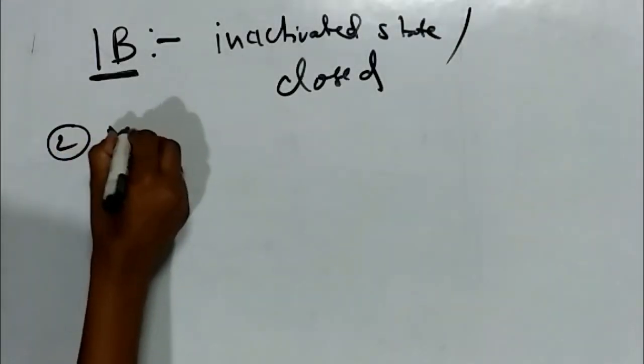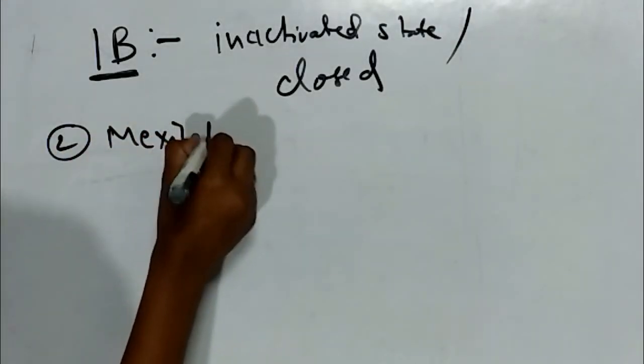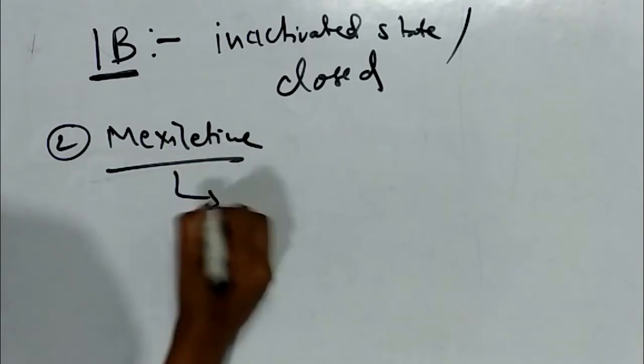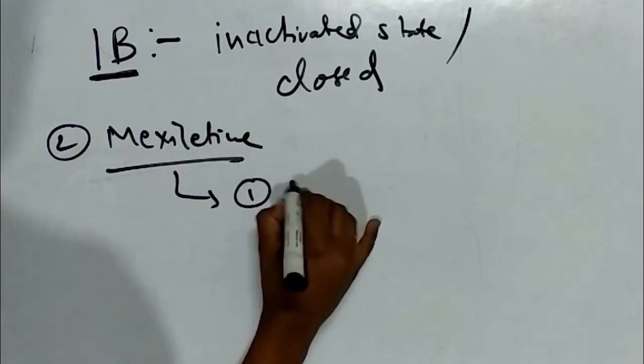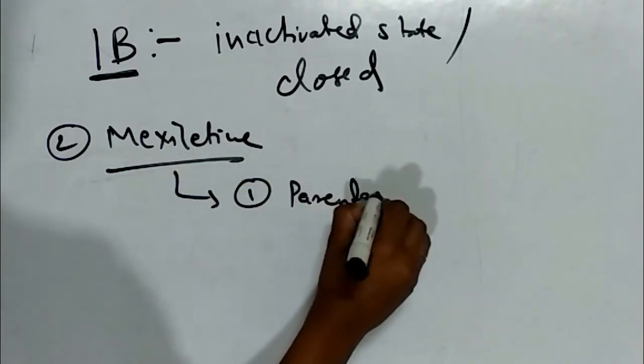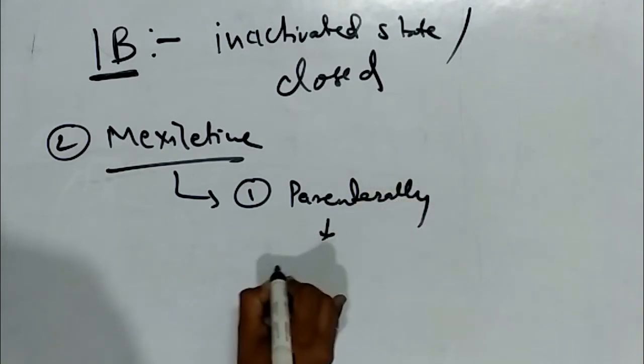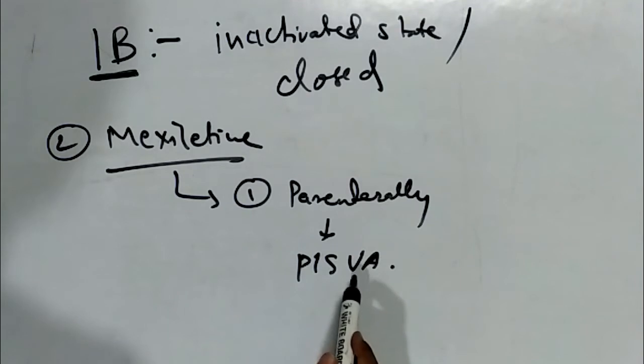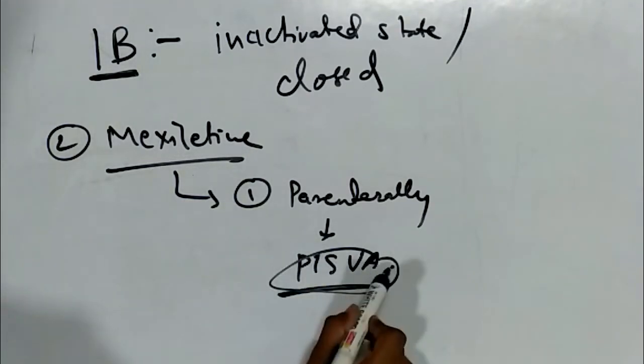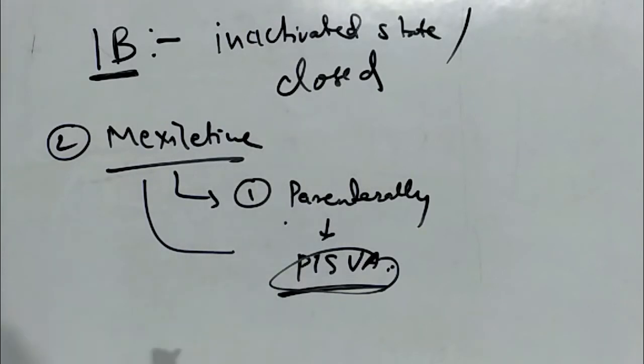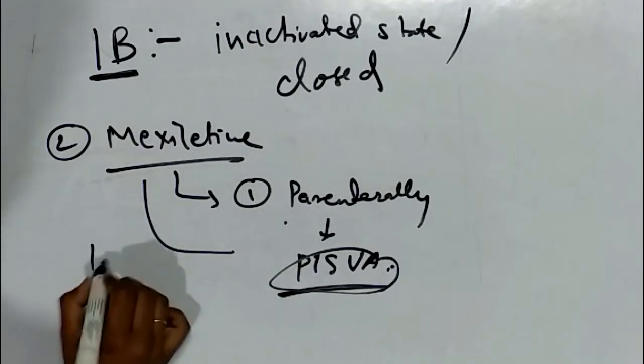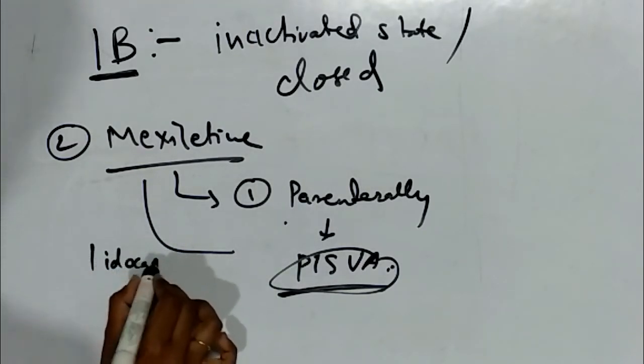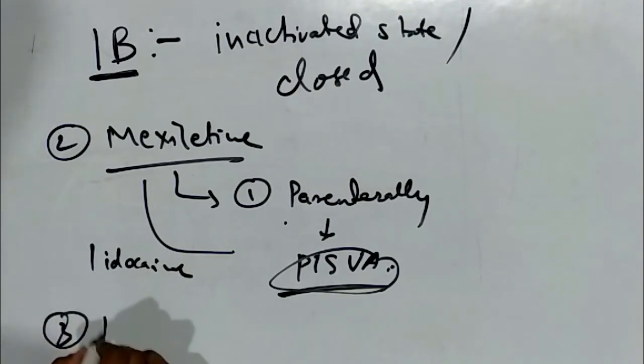Both increase the half-life of lidocaine. The second drug of this class is mexiletine. It is given parenterally for post-infarction sinister ventricular arrhythmia. This is the drug of choice for PISWA and is mostly used rather than lidocaine. The third drug of this class is phenytoin.